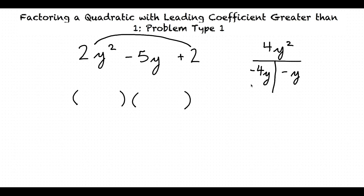Our next step is to look at our first factor, negative 4y, and our first term, 2y squared, and find the greatest common factor between these two things. 2 and 4 have a greatest common factor of 2, and y squared and y have a greatest common factor of 1y. So 2y is what we can pull out, and we put it in the first set of parentheses. The first part in our second set of parentheses will be the greatest common factor of 2y squared and our second term, negative y, which is 1y.